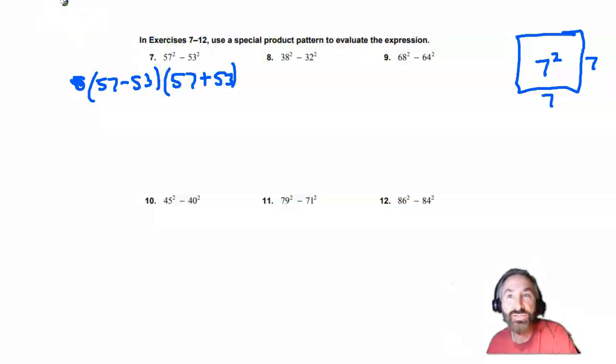You might notice that it looks a lot like the pattern where we factored other things. Like, for instance, 49x squared minus 25. We would factor in this way: 7x minus 5 times 7x plus 5.